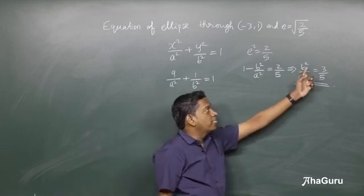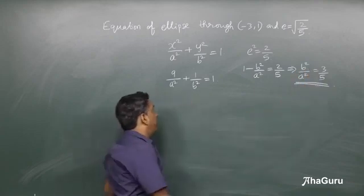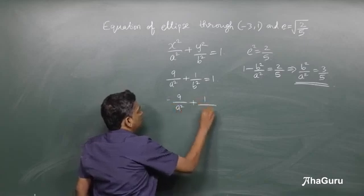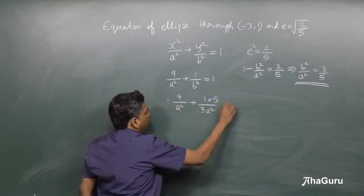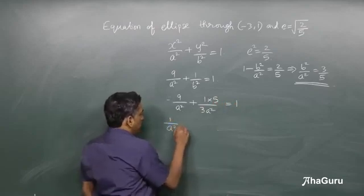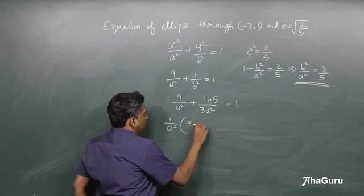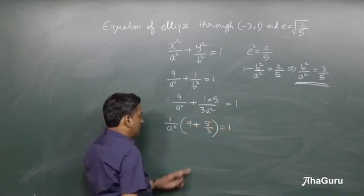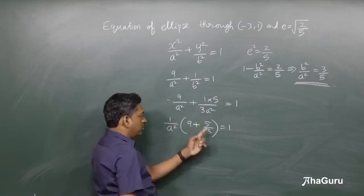We can substitute for b squared as 3 a squared by 5. Therefore, 9 by a squared plus 1 by 3 a squared by 5 equals 1. This is simply 1 by a squared into 9 plus 5 by 3 equals 1, which is nothing but 27 plus 5.